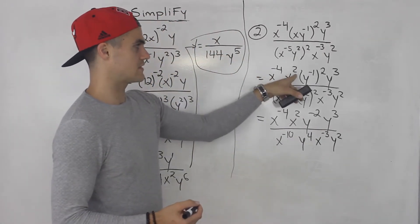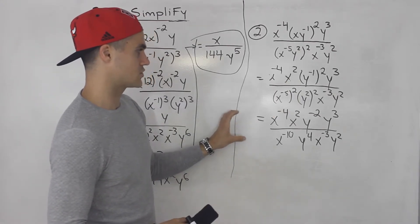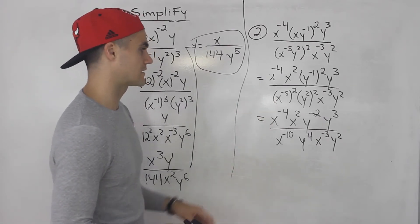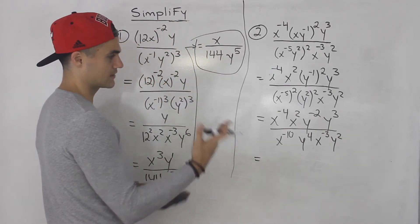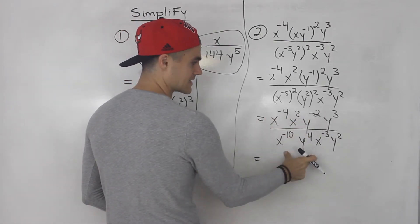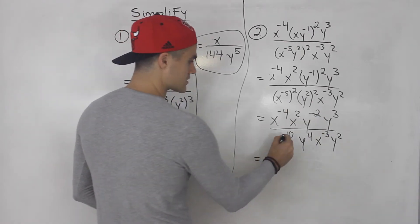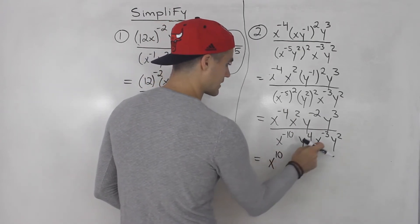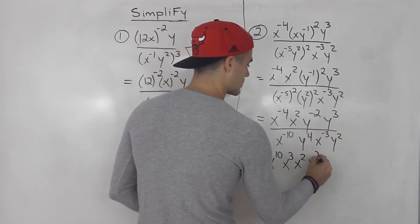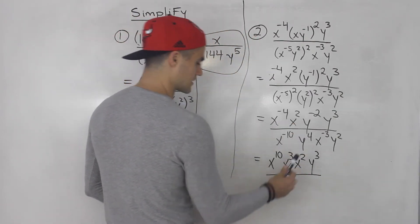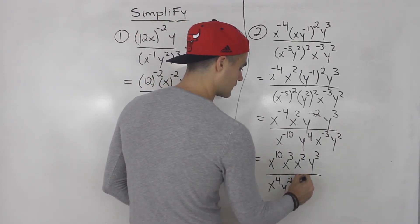Notice from here you could have simplified these two, since they have the same base. But I like to first make sure that everything is distributed and then go from there. So at this point I look for any negative exponents and flip them. This x to the negative four and y to the negative two come down to the denominator. X to the negative ten and x to the negative three come up to the numerator — that'll be x to the ten and x to the three. X squared and y to the three are still up there, all over: x to the four, y squared, y to the four, and y squared.